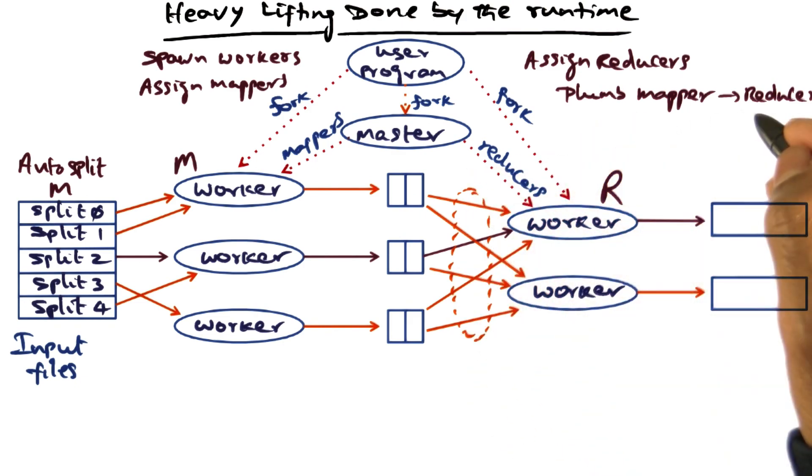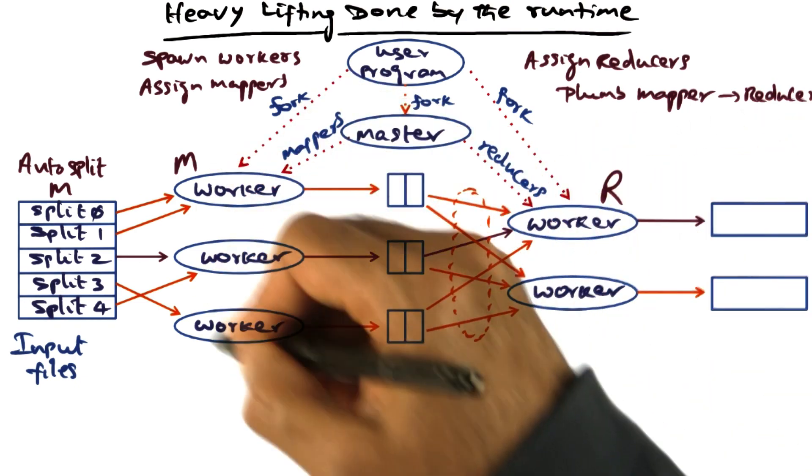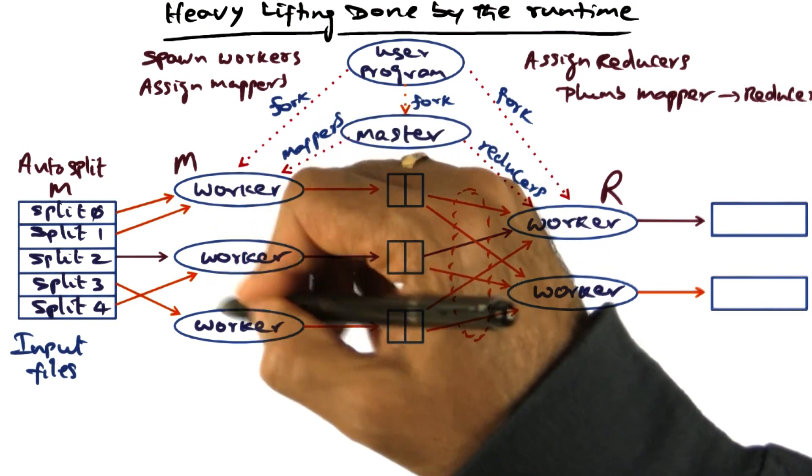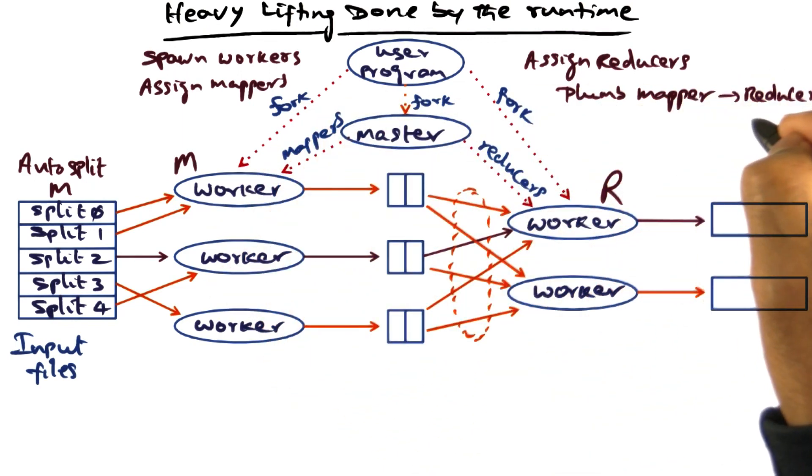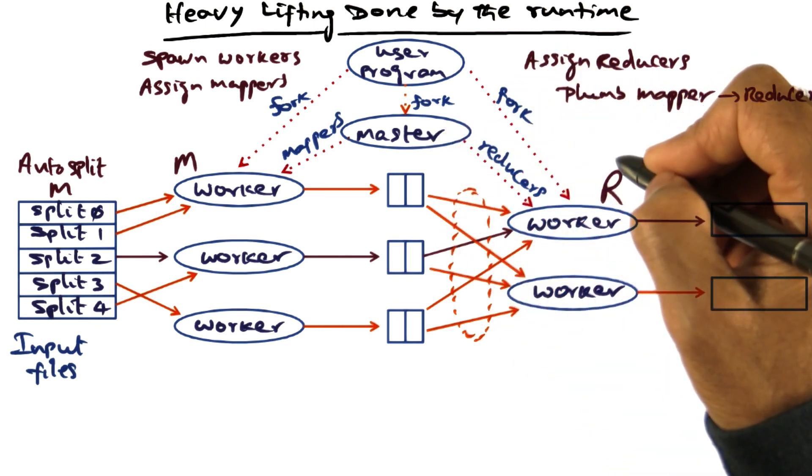Setting up these communication paths between the producers of data, the mappers, and the consumers of data, the reducers, is the plumbing that the master does as the next thing.